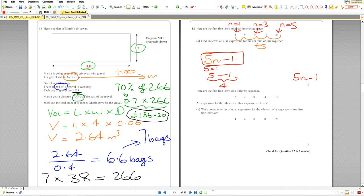Here are the first five terms of a different sequence: 2, 2, 0, -4, -10. An expression for the nth term of this sequence... In terms of n, an expression for the nth term of a sequence whose first five terms are these. What do we realize about the pattern? The bottom one is double of the top one.